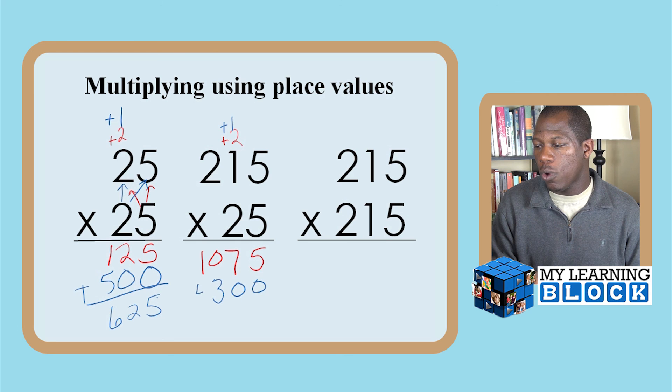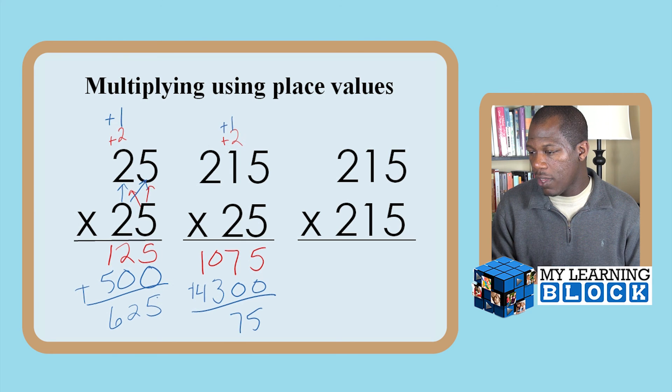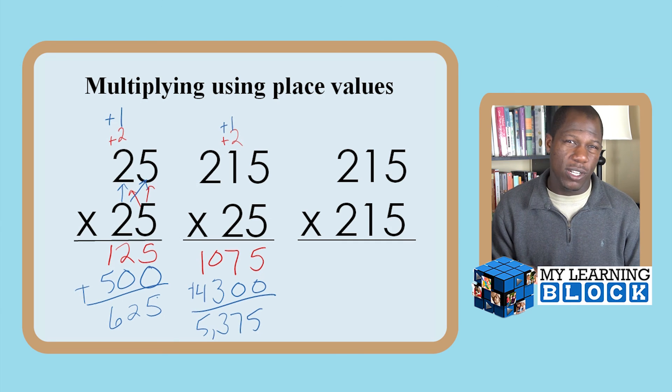If I add it all together, what do I got? 5, 7, 3, 5, 5: 5,375.